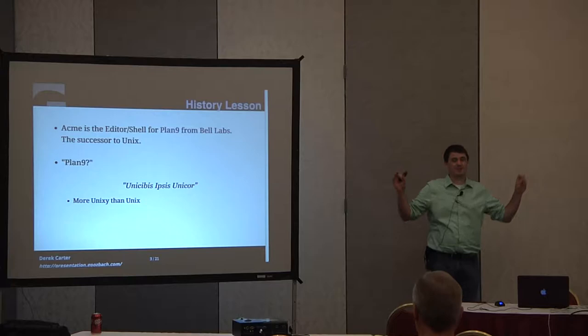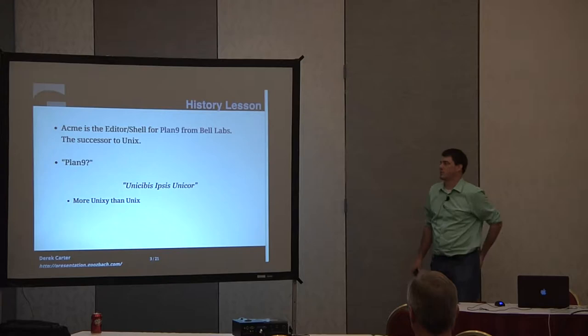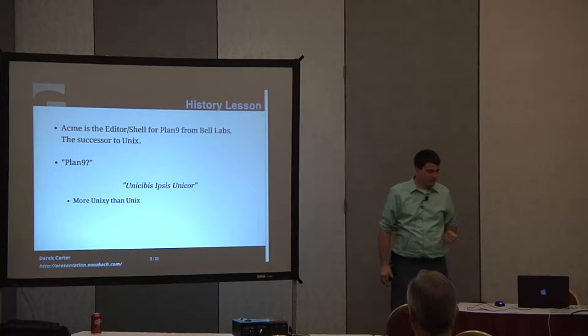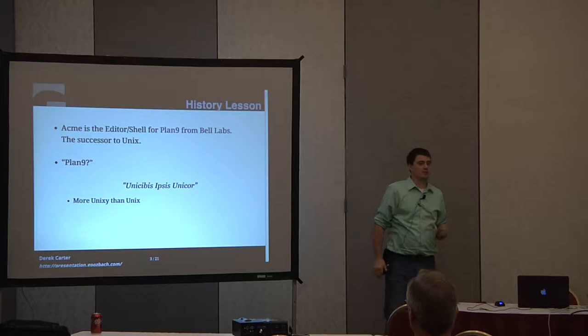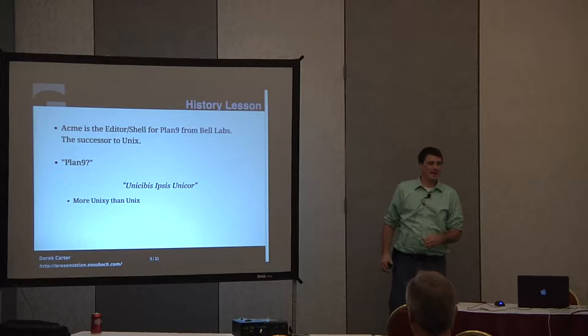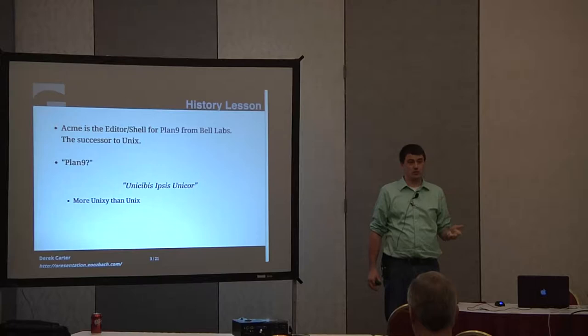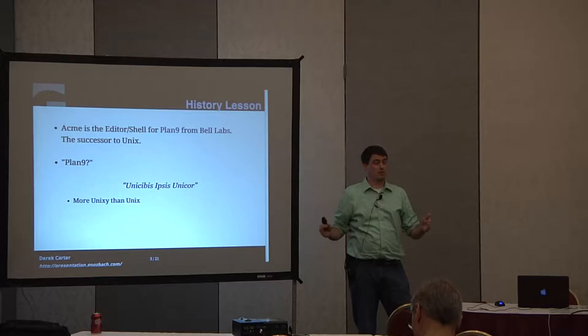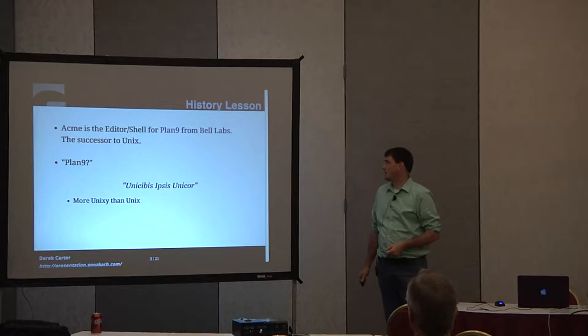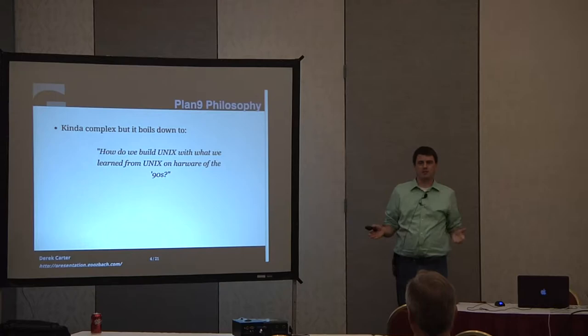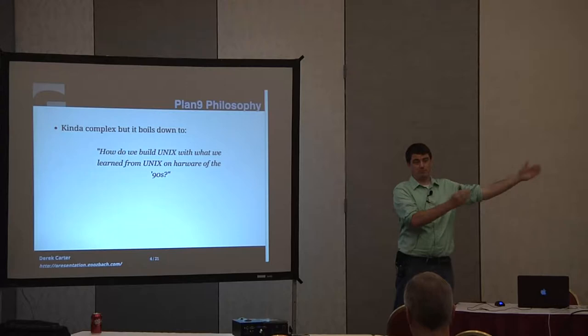What is Plan 9? Plan 9 is best described by its motto: 'Unisibus Ipsus Unicor' — of the Unixes, most Unix-like. It is the successor to Unix, written by Bell Labs. It took those paradigms that Unix started — everything's a file, plain text, do one thing well — to its logical end. Unix is essentially 1960s-style technology that we've iteratively improved to get to Linux and Unix today. But it's still based on those philosophies from the 60s.